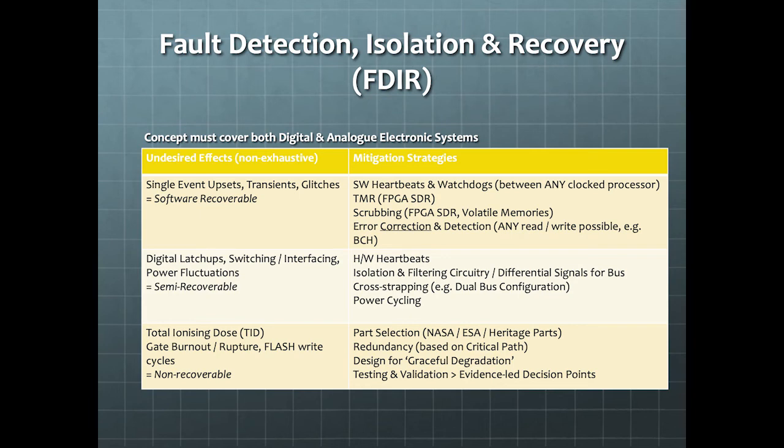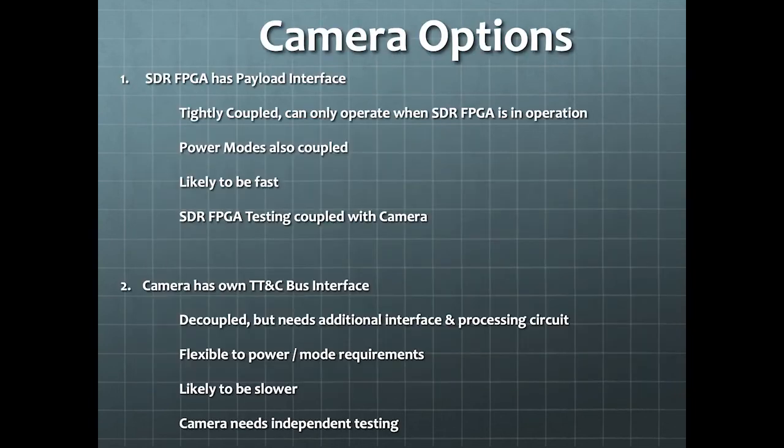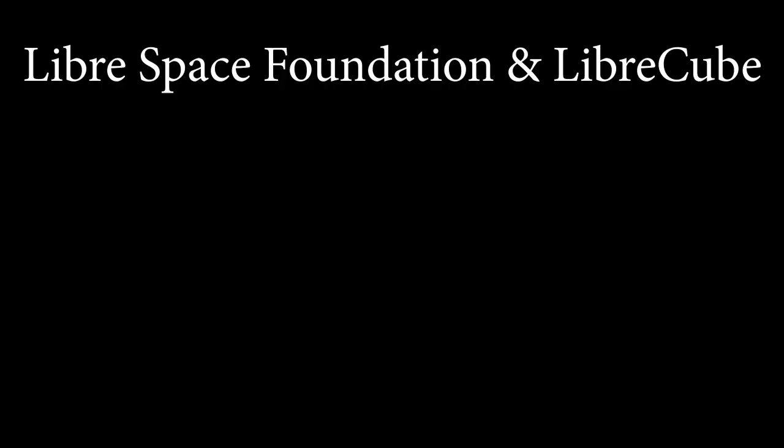Here's the definition of the fault detection, isolation, and recovery. There are three sets of undesired effects and specific mitigation strategies. We aim for graceful degradation and not the elimination of all faults. The most frequently asked about extension is a camera. There are two options, and they are enumerated here with their advantages and disadvantages. What other resources do we have? LibraSpace Foundation LibraCube project provides a baseline design for 1U cards. LibraSpace Foundation has given us a lot of support and welcomed us to their community. We are deeply appreciative of the friendship and advice they have given.